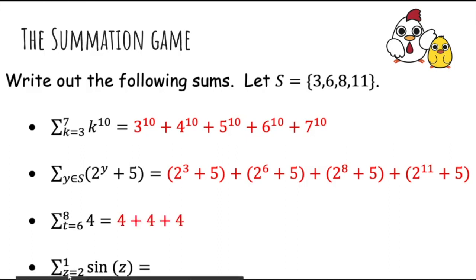What about this one? Sum from z is equal to 2 up to 1 of sine of z. Well, this is a trick question because there are actually no integers in this range, because we started counting from z is equal to 2, but this is already over the end of the sum, which is 1, so there are no terms in the sum. The sum is empty, so therefore it's 0.